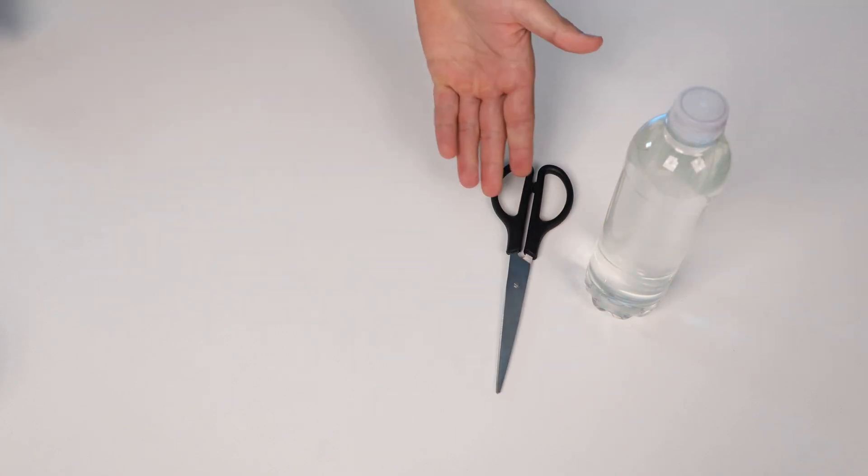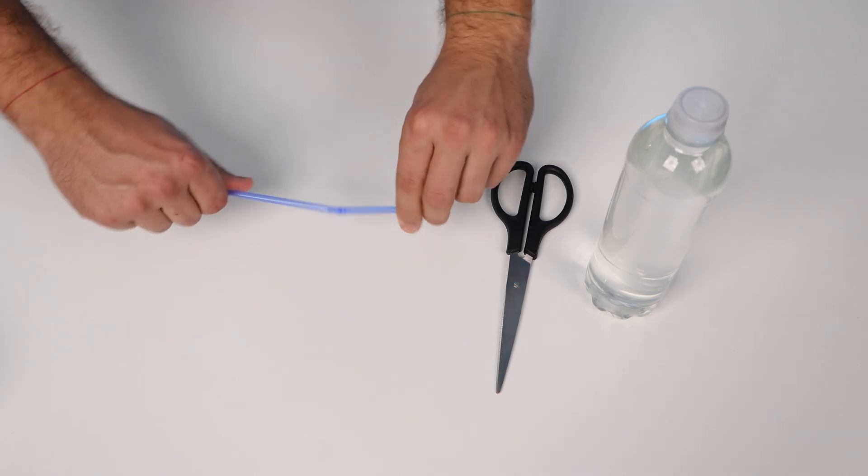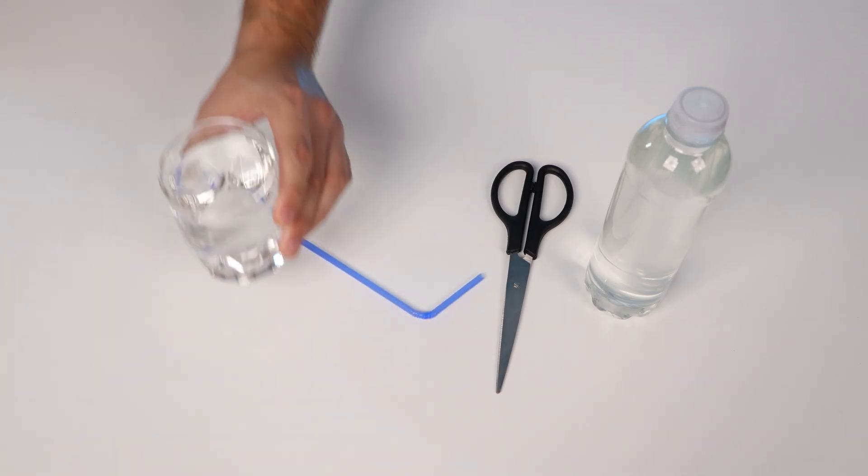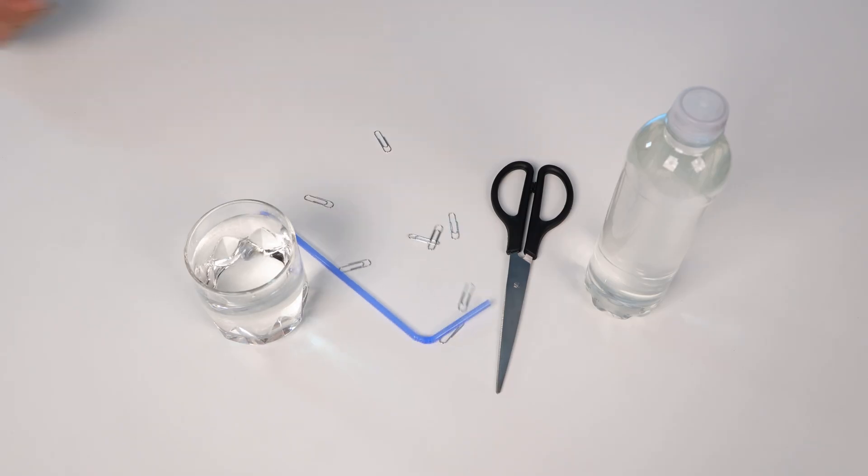So what will we need for this experiment? Plastic see-through bottle filled with water, scissors, plastic bendy straw, glass of water, and some paper clips.